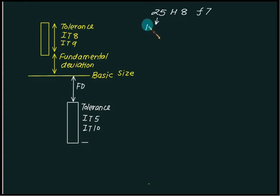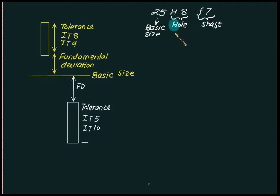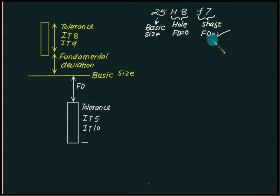Consider the example 25H8F7. So 25 means basic size. H8 is for hole and F7 is for shaft. Since we are using capital H, the fundamental deviation will be 0. For the shaft, since the letter F exists, the fundamental deviation will be present. IT8 represents the tolerance for the hole, and IT7 represents the tolerance for the shaft.